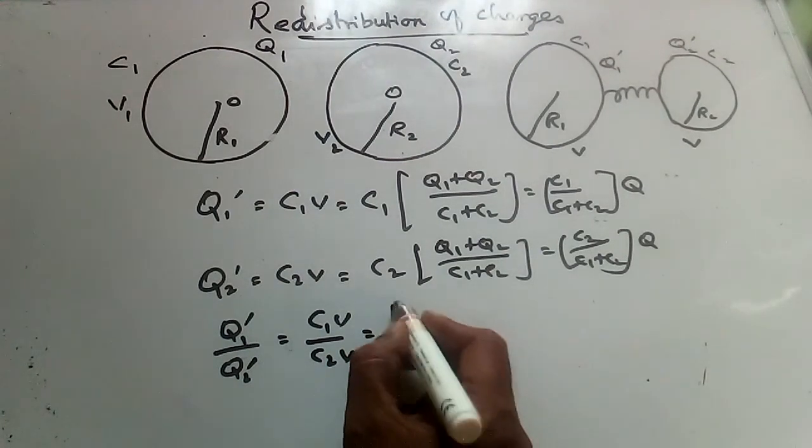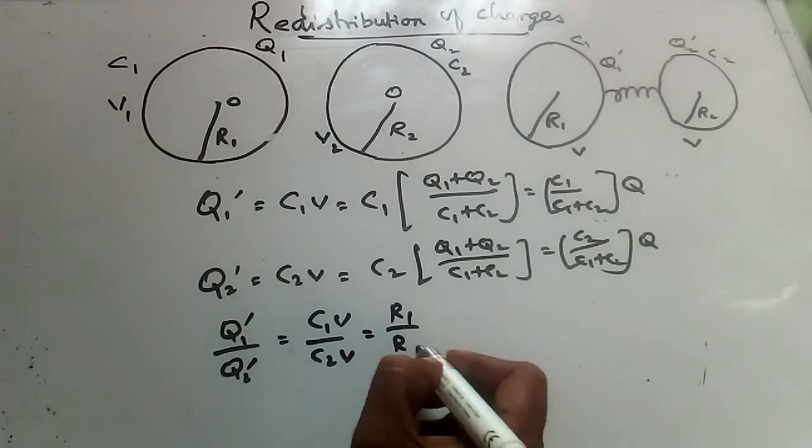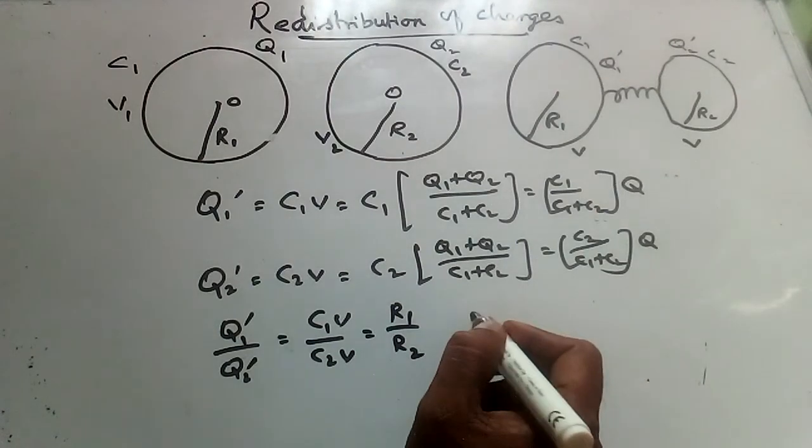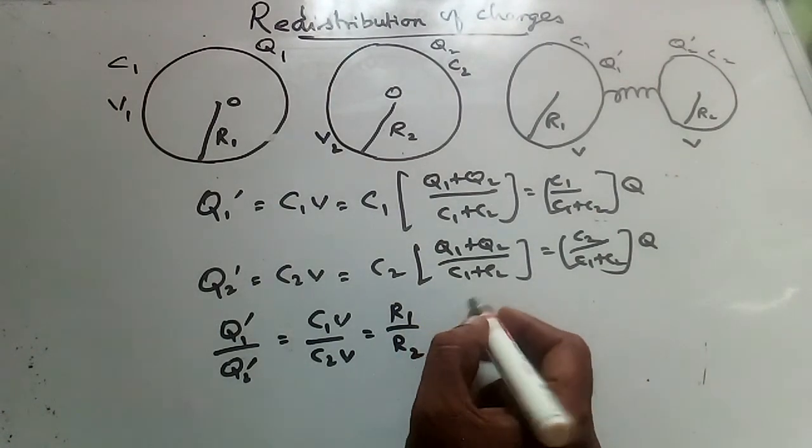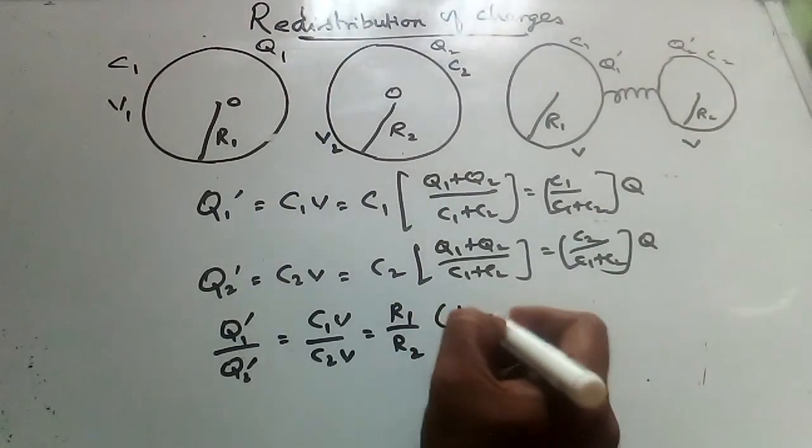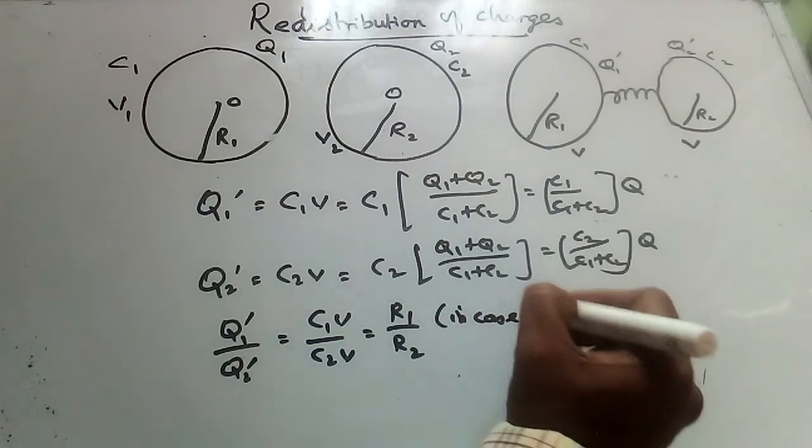And also equal to ratio between those respective radius cells in case of spherical conductors. In case of spherical conductors only.